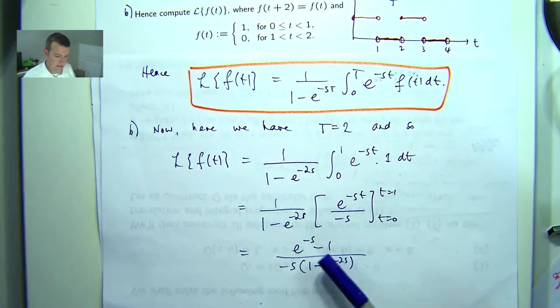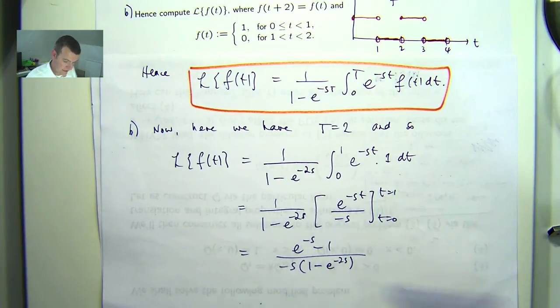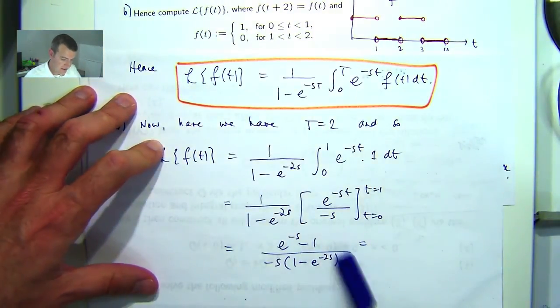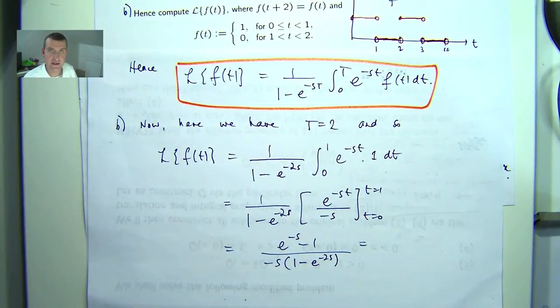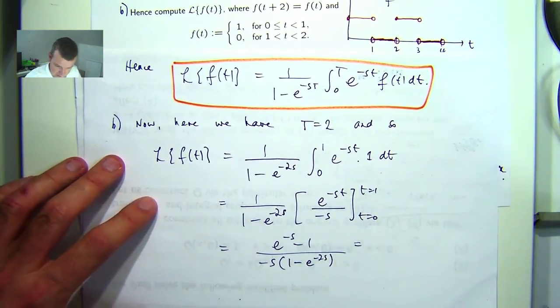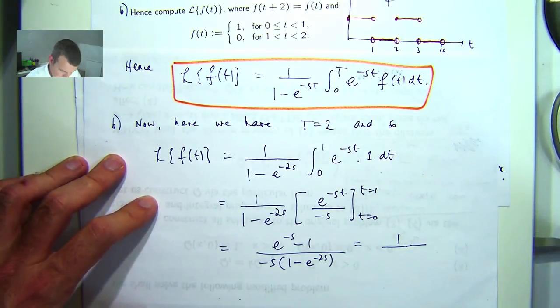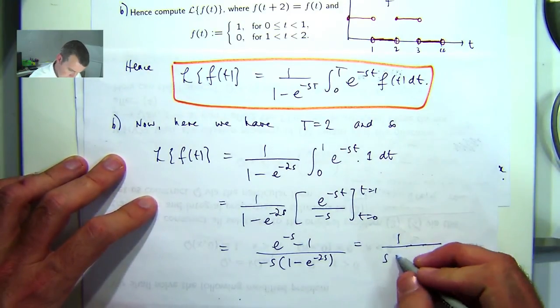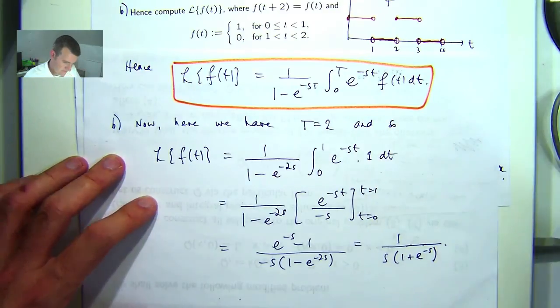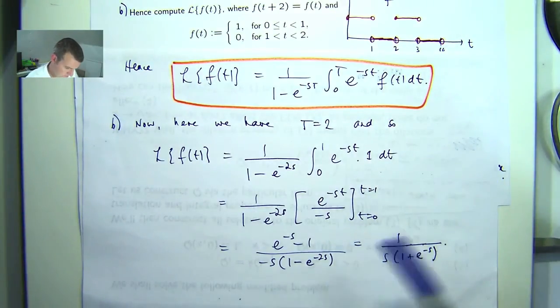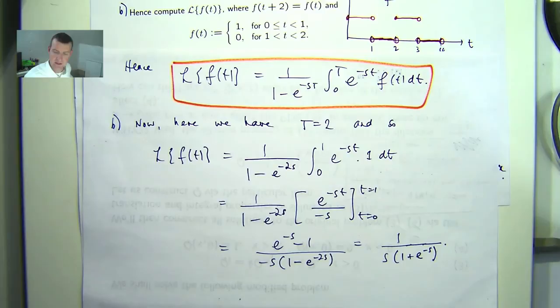Now you can clean this up a little bit if you want to. You can factorize this and you can actually cancel off the denominator. So factor this into 1 minus e to the minus s and 1 plus e to the minus s. And you should end up with 1/(s(1 + e^(-s))). So that is my transform.